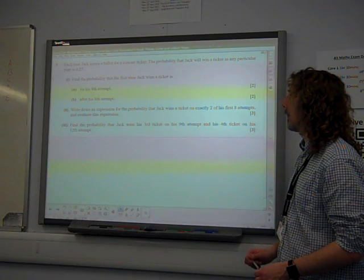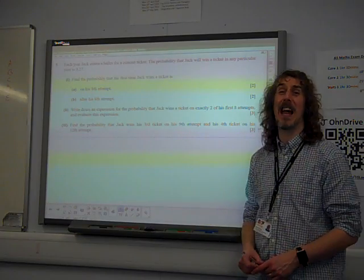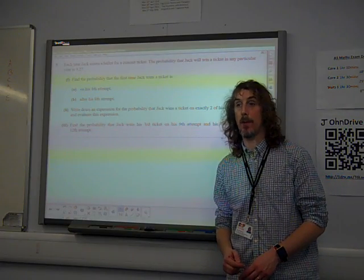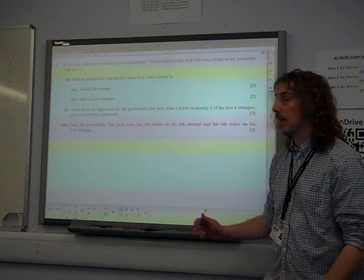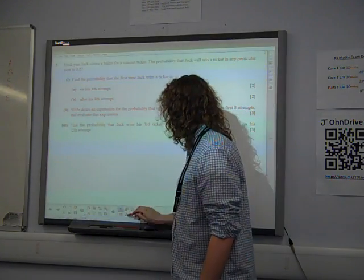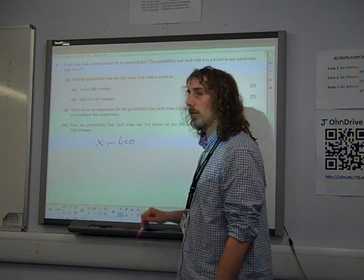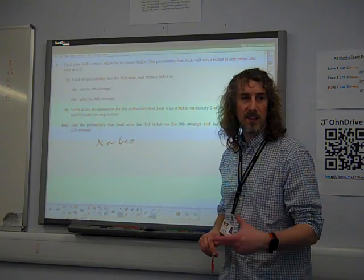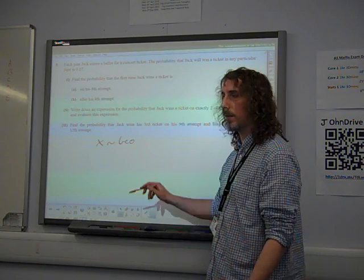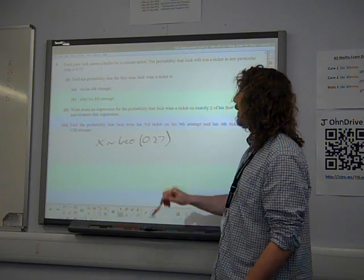The problem is that the first time he wins a ticket is on these number of attempts. This is classic geometric distribution, isn't it? Because he's going to keep trying until he gets the ticket. So X, have you noticed, I am keen that you should do this - if you spot it's a distribution, start by saying what distribution it is. So X is a geometric distribution with probability of success being 0.27.